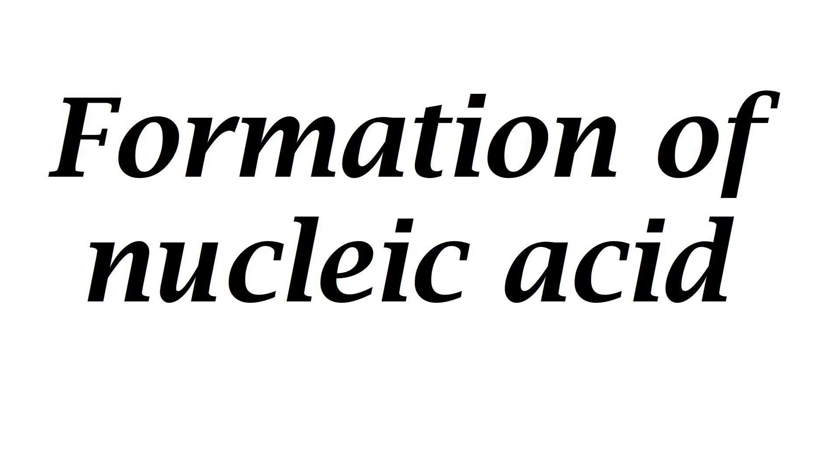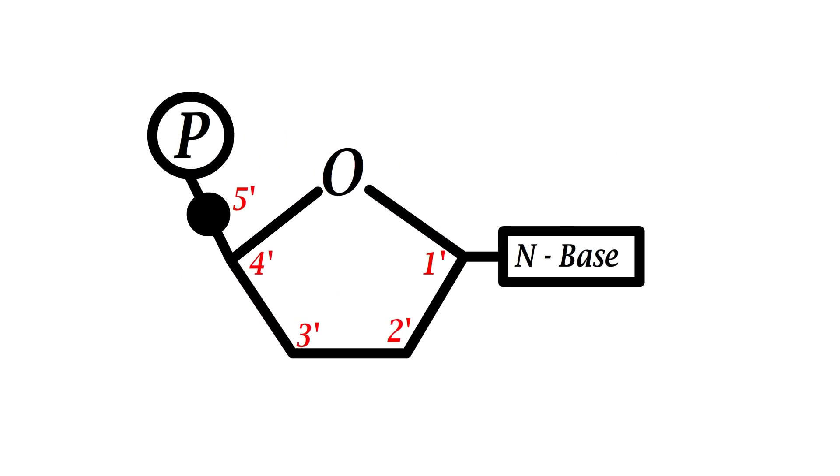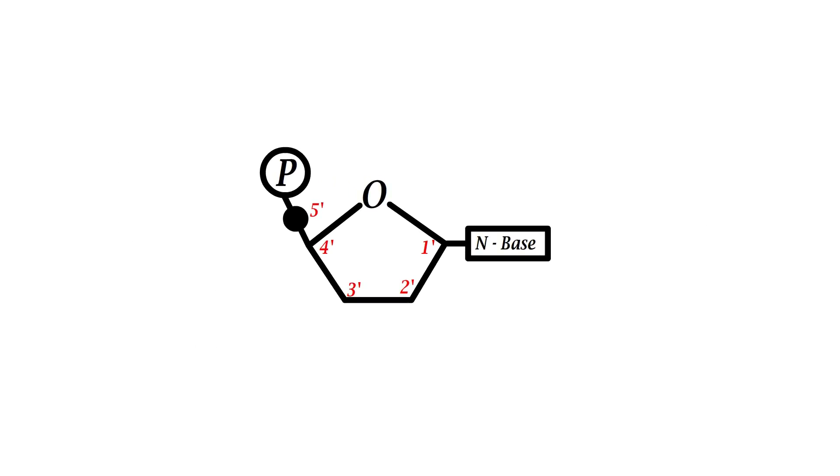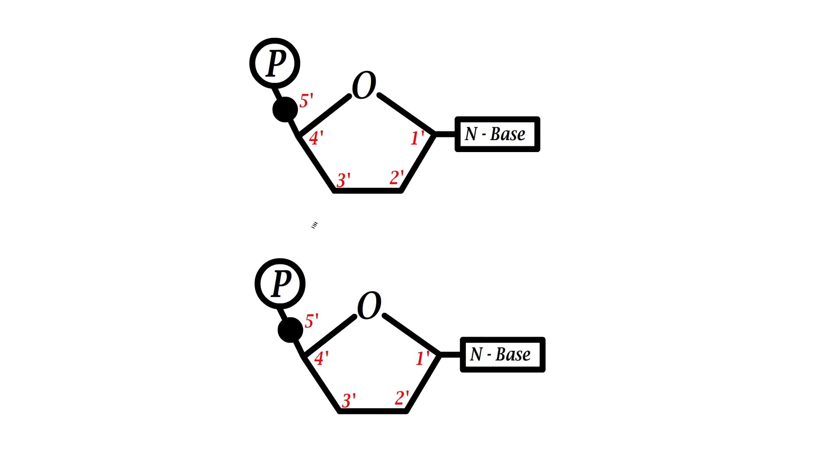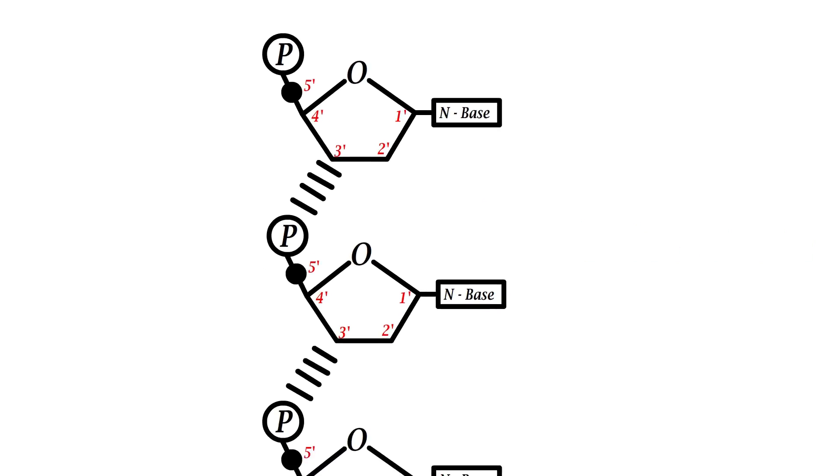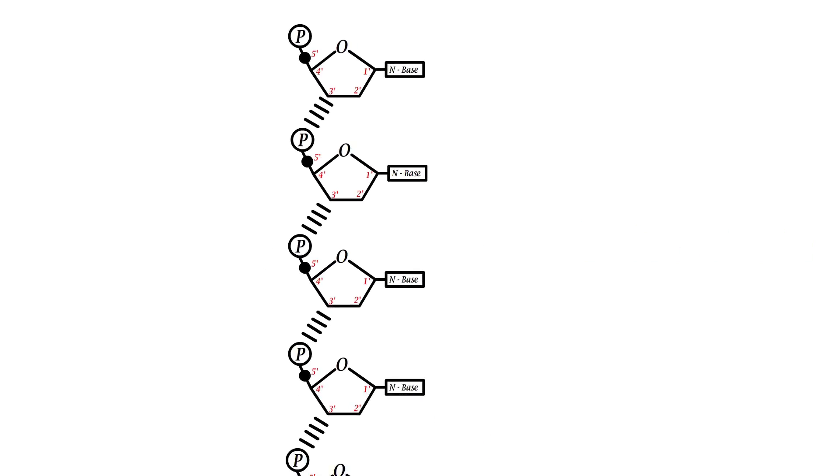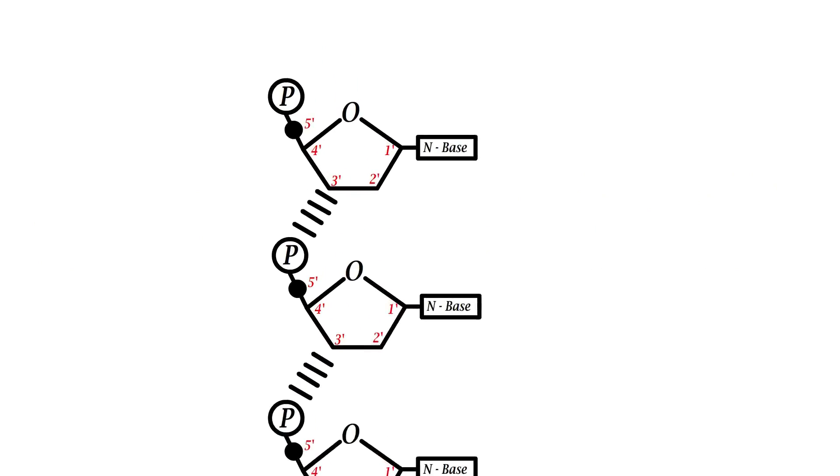These nucleotides get linked between one another to form a chain of nucleic acid. In this process, the phosphate group of one nucleotide is bound to the carbon 3 prime of the other. This linkage is termed as the phosphodiester bond. This process gives a long nucleic acid chain of which the backbone is the sugar-phosphate combo, from which the nitrogen bases protrude towards a side.